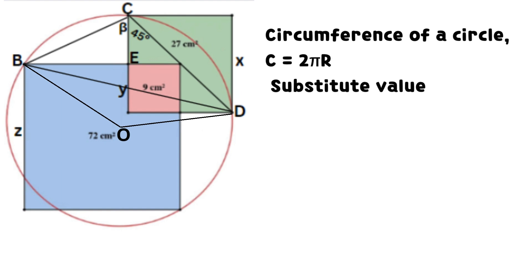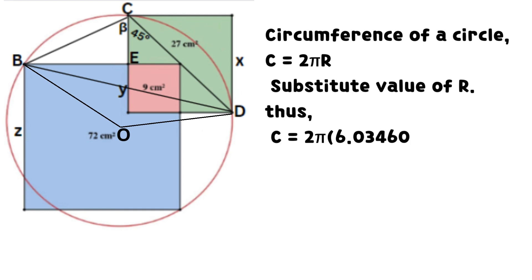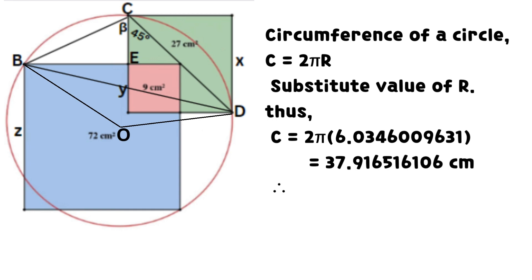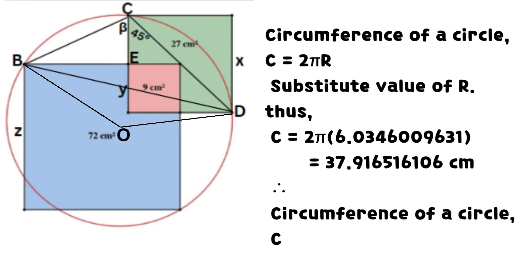Circumference of the circle: C = 2πR. Substituting the value of R, C = 37.916516106 cm. Therefore, the circumference of the circle C = 38 cm to 2 significant figures.